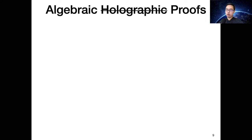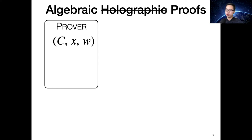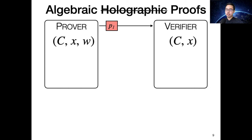Let's first see what algebraic holographic proof means in our context. At a high level, an algebraic proof is just an interactive proof where the prover's messages have a kind of algebraic structure. In our formalization, we restrict the prover's messages to be low-degree polynomials — for example, a univariate polynomial with degree much smaller than the size of the field. When the verifier receives the message from the prover, the verifier does not need to read the entire low-degree polynomial. Instead, it can access the polynomial as an oracle — for example, querying the value of the prover's polynomial at arbitrary points without paying the cost to actually read and evaluate the polynomial.